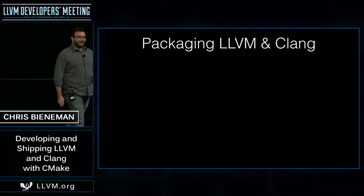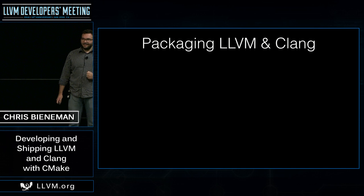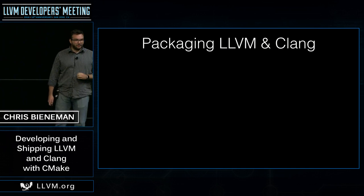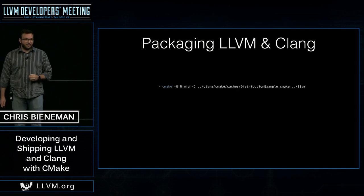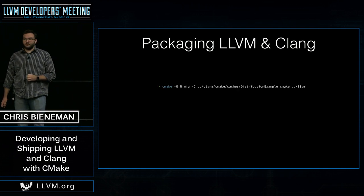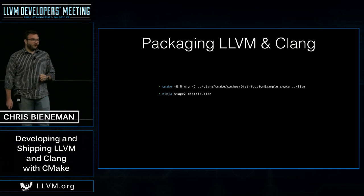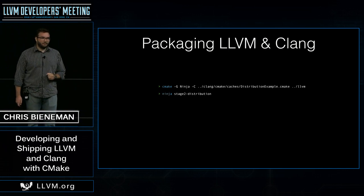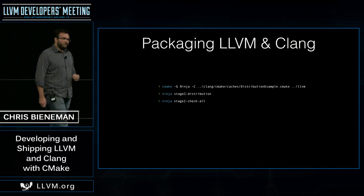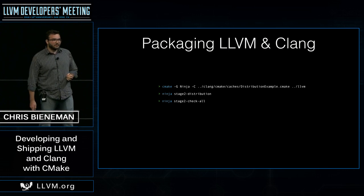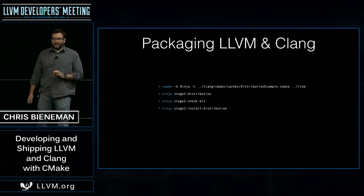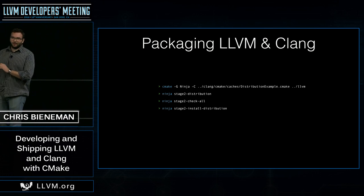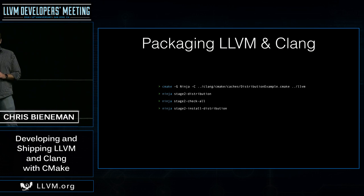In CMake, we can build a distribution in just four very simple commands. We start with a CMake command to configure the build. We then build all of the things we want to distribute. We run check-all to test and make sure it works. And we install it. I'm going to blow these up so we can talk more about what they do.